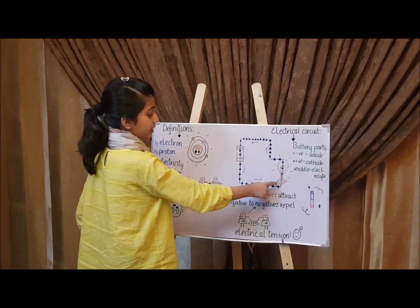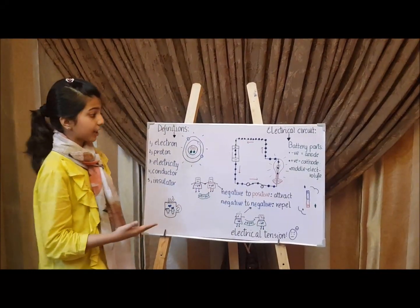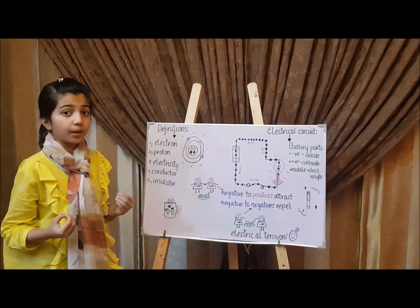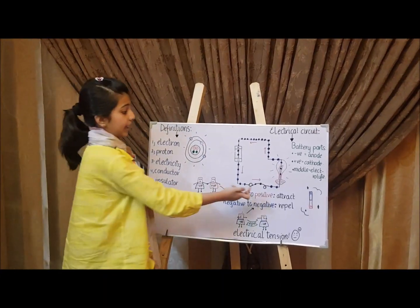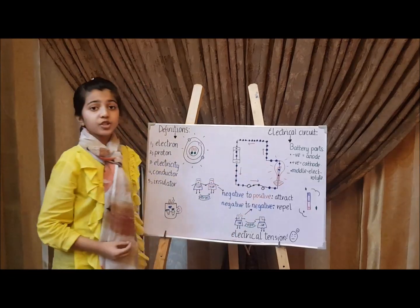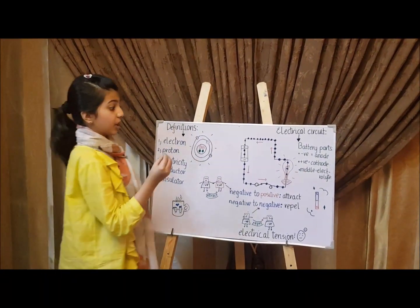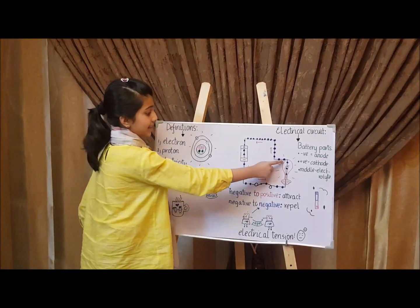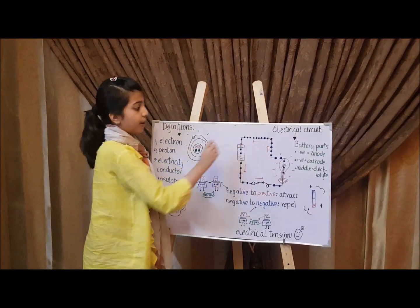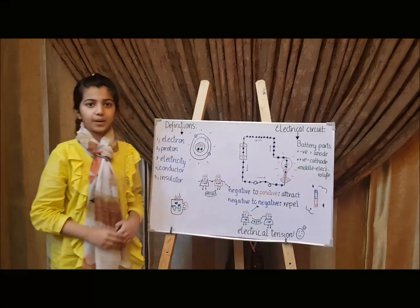The electrons have entered the bulb. How have they entered the bulb? There is a thin wire inside the bulb called the filament. The electrons enter the lamp with the help of the filament, which is a thin wire made of a metal called tungsten. With the help of the tungsten, the electrons also exit the lamp and go back to the positive terminal, and from there they enter the negative terminal again.